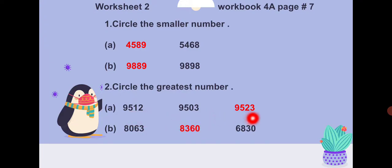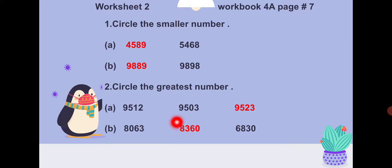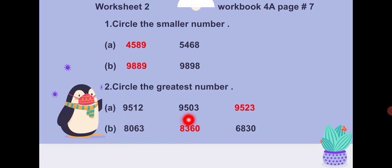Part B: eight thousand and sixty-three, eight thousand three hundred and sixty, and six thousand eight hundred and thirty. Two values start with eight and one starts with six, so the six-thousand value is eliminated immediately. Between the two eight-thousand values, comparing hundreds: zero versus three — three is greater, so eight thousand three hundred and sixty is the greatest number.